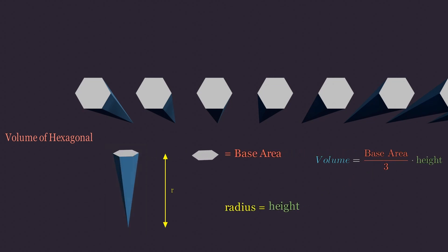The volume of a hexagonal pyramid is given by the formula: one-third the product of the base area and the height.